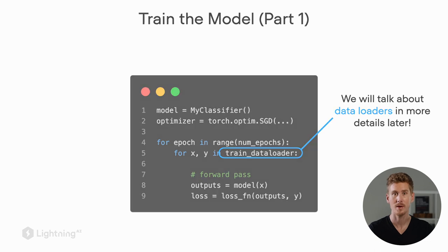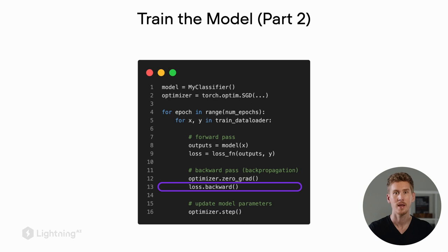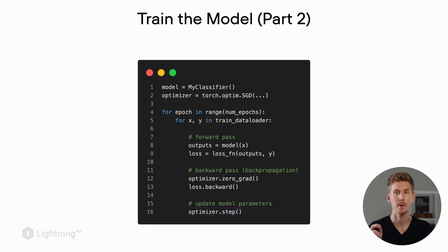After computing the loss, there are only three more steps. First, we call zero_grad on the optimizer. Then we compute the gradients with dot backward. And finally, we call the step method, which updates the model parameters. So to summarize: backward computes the gradients and step updates the model parameters.